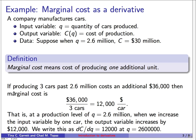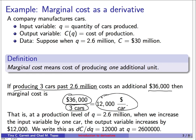Imagine that producing three additional cars past 2.6 million costs an additional $36,000. We changed the input variable by three and saw the output increase by $36,000. Marginal cost is defined as the change in cost divided by the change in quantity — $36,000 divided by 3 cars — which is $12,000 per car. We're estimating that producing one additional car costs $12,000. At a production level of 2.6 million, we write this as dc/dq = 12,000 at q = 2.6 million.